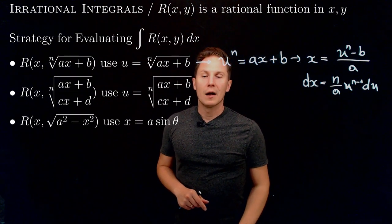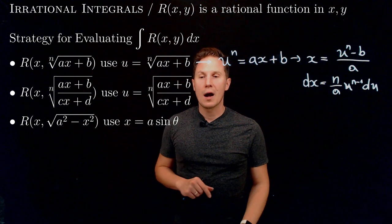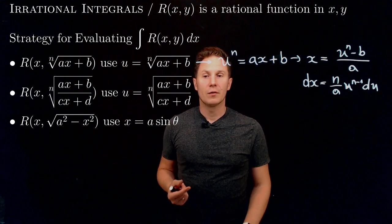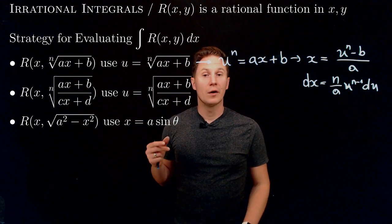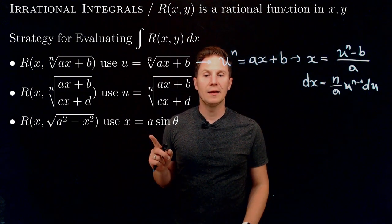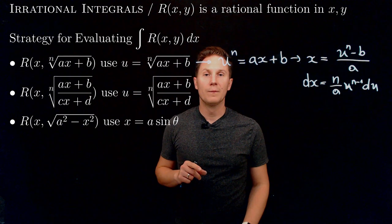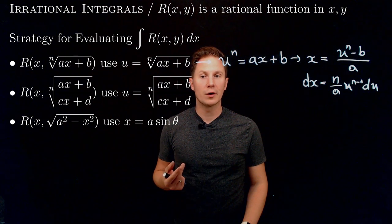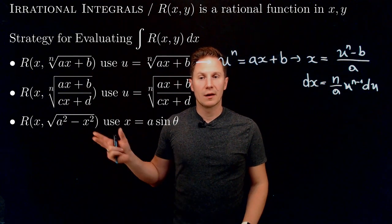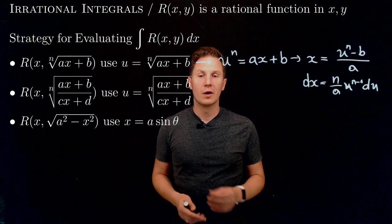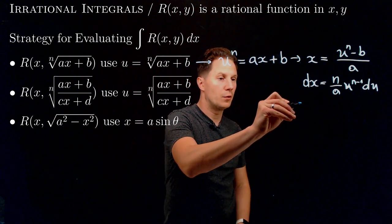Now, integrals where y is the square root of a² − x² (with a being a constant) can be turned into a trigonometric integral using the substitution x = a·sin(θ), or x = a·cos(θ) would also work, turning the irrational integral into one that involves trigonometric functions. Let's see how and why that works.